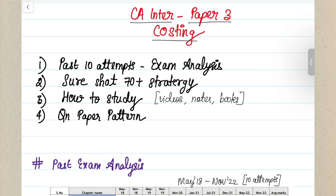Hello guys, welcome to Bhamana's Online Academy. As you would have read in the title, in this video we are going to see the CA Inter Paper Number 3 Costing Exam Analysis. Costing is one of your easiest papers to score good marks. If you study effectively and know the strategy very well, it will be very easy to crack the examination.